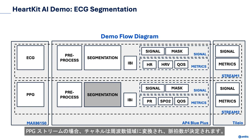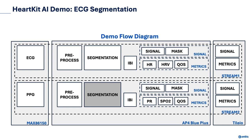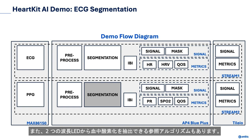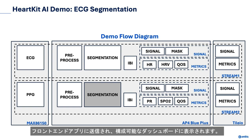For the PPG stream, the channels are transformed to the frequency domain to determine the pulse rate. We also have reference algorithms to extract blood oxygenation from the two wavelength LEDs. For demo purposes, the signals, segmentation mask, and metrics are sent over BLE to our Tileo front-end app to be shown in a configurable dashboard.